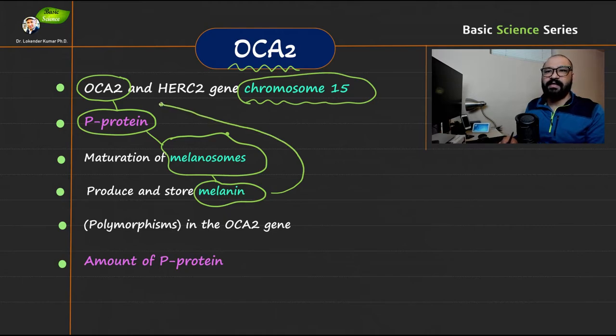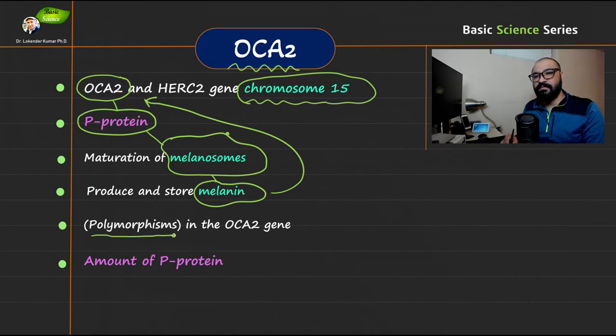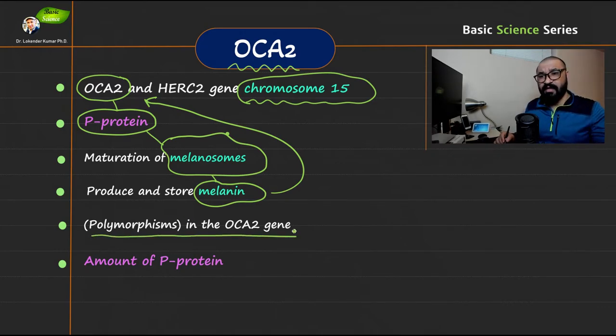As you can see, the production and storage of melanin is affected by the OCA2 gene. The polymorphism in this particular gene is responsible for the different eye colors.